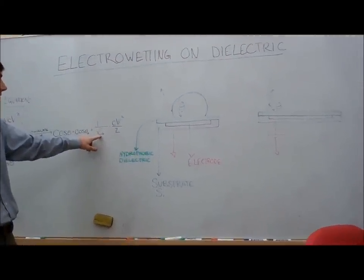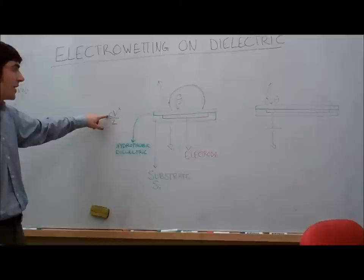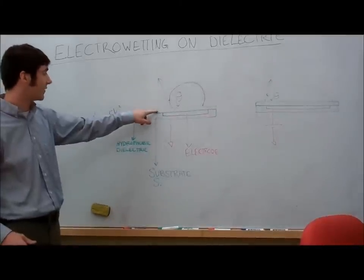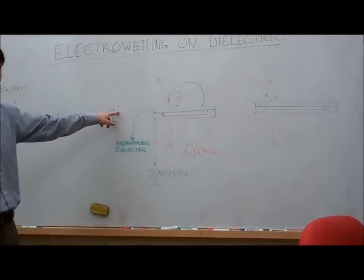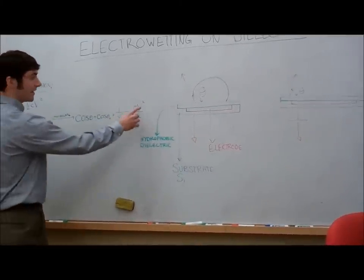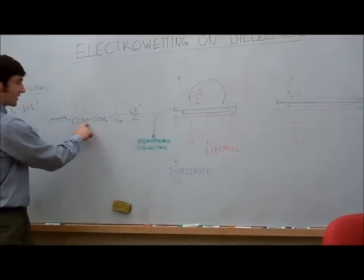Theta without an applied voltage. This is the surface tension between the liquid and the gas, the capacitance per unit area of our hydrophobic dielectric surface and our applied voltage. So basically what this tells us is that if we apply this voltage, we can change this contact angle.